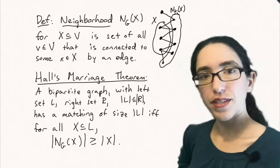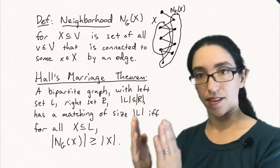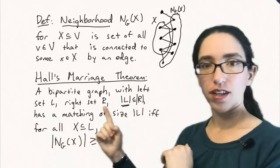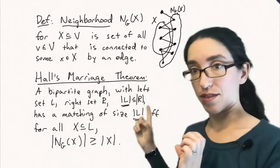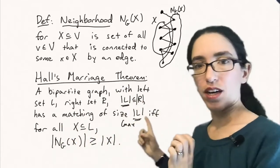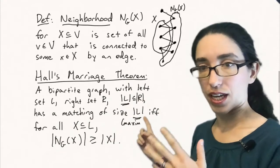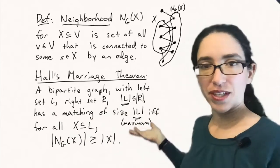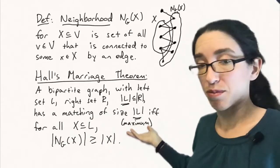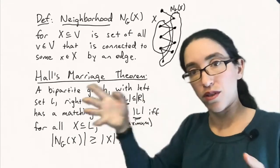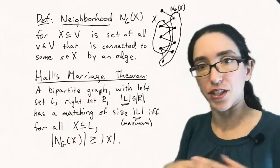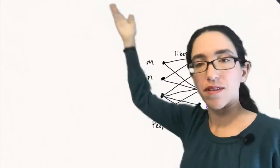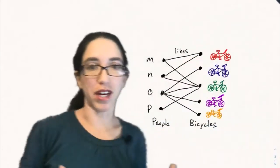So then Hall's marriage theorem says that if you have a bipartite graph, just like the bikes and the people, the people on the bikes, you have a bipartite graph and that will be definitely a maximum matching because you can only match things between the left and the right set. So once you've saturated L, you're done. So it has a matching of size of L, if and only if every neighborhood is always bigger than the subset you're looking at.